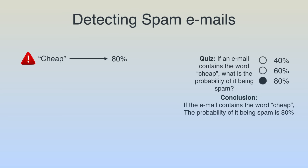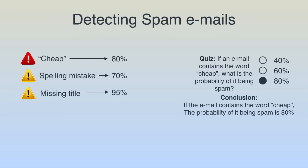We can look at other features and find their associated probabilities. For example, emails containing a spelling mistake have a 70% probability of being spam, and emails missing a title have a 95% probability of being spam. When future emails come in, we combine these features to guess if they're spam or not. This algorithm is known as the Naive Bayes algorithm.